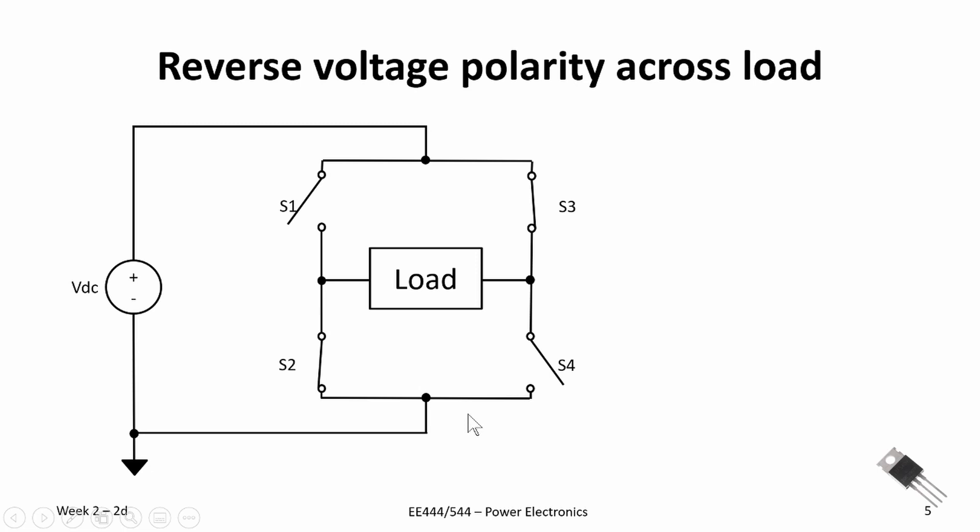We can reverse the polarity across the load by closing S3 and S2, and now we have the polarity plus to minus from right to left on this drawing of our DC supply. Again, we can apply the same PWM principle with S3 and S2 to adjust the average voltage across the load.